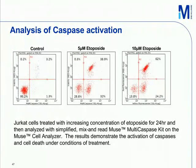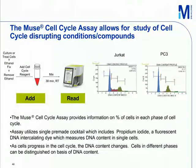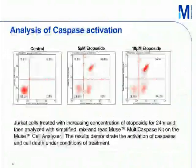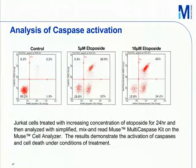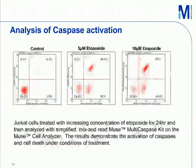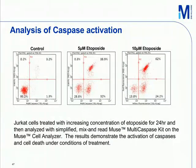Here is an example of the caspase assay utilized to look at the impact of the anticancer compound etoposide. Control cells show only the live population; on treatment with 5 micromolar and 10 micromolar etoposide, there is the emergence of a caspase-positive population that goes up from 1.3% to 32%, along with a death population showing caspase activity of 38.9%, and this increases with increased etoposide concentrations of 10 micromolar.